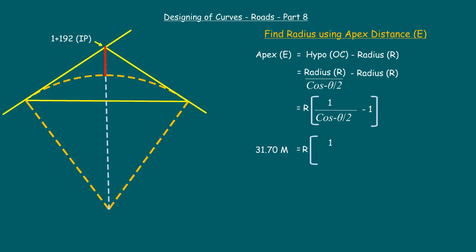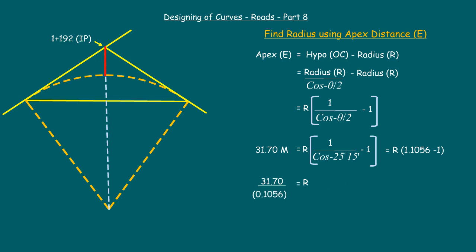The apex distance of 31.70 meters equals radius into (1/cos(25 degrees 15 minutes) minus 1). The value of 1/cos(25 degrees 15 minutes) equals 1.10560, so 31.70 equals R into 0.1056. Therefore, radius R equals 31.70 divided by 0.1056, which gives 300.189 meters — let us say 300 meters for easy calculations.